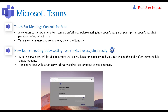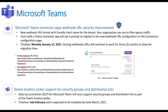The next couple here are really light in terms of end user impact, but I wanted to mention them. Touch bar meeting controls for Mac users — just some enhancements there that they might want to know about. This should already be in market. The other one is a security enhancement where you're able to granularly decide who is put into the lobby. You can choose as a meeting organizer that only invited users can bypass the lobby automatically versus having to approve every single person. This starts in early February and is complete by mid-February.